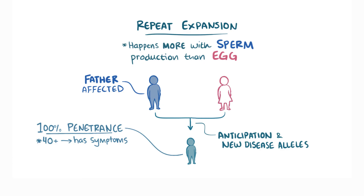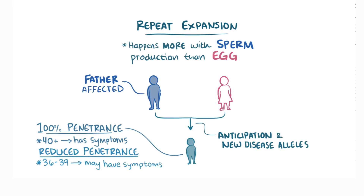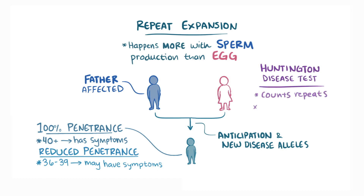For reasons that remain unknown, people with 36-39 repeats can show reduced penetrance — some may have symptoms while others may not. Because of this penetrance, the test for HD, which counts the number of CAG repeats, is really good at determining whether Huntington disease will develop in an at-risk individual.